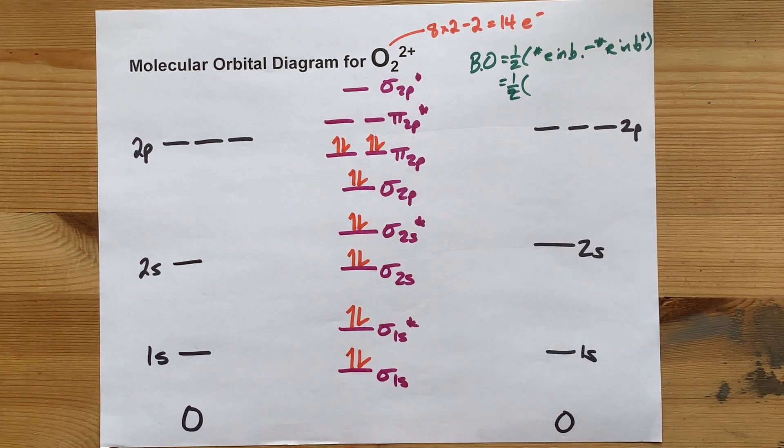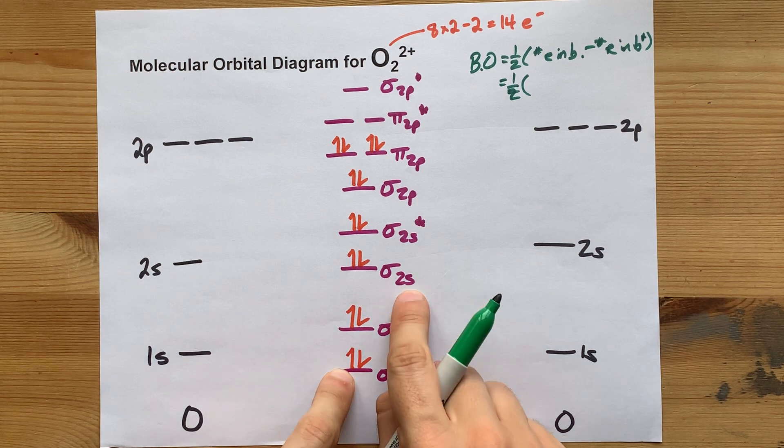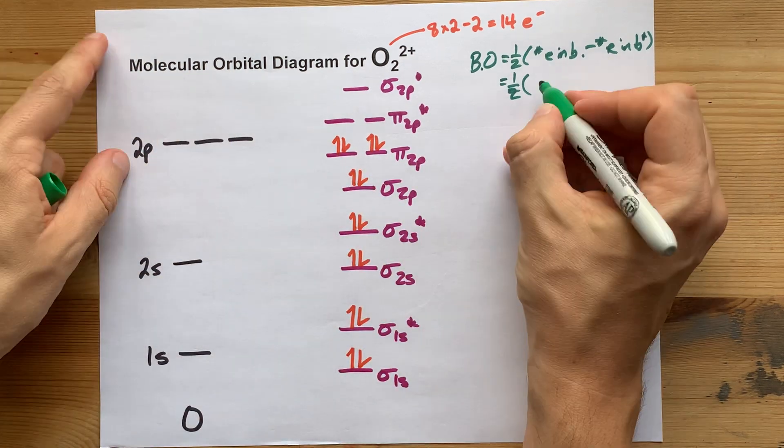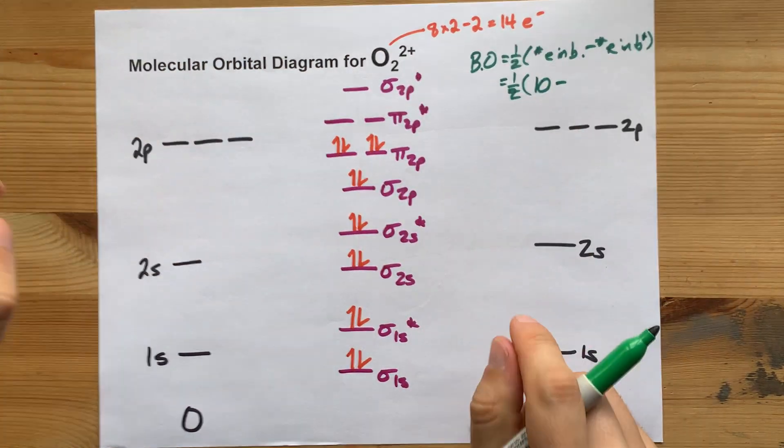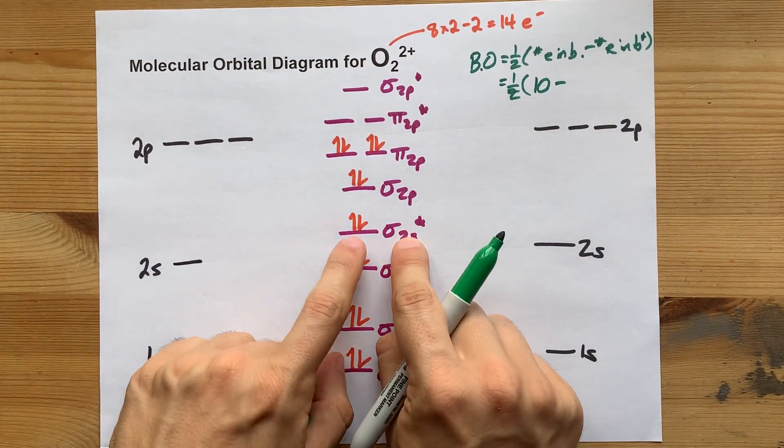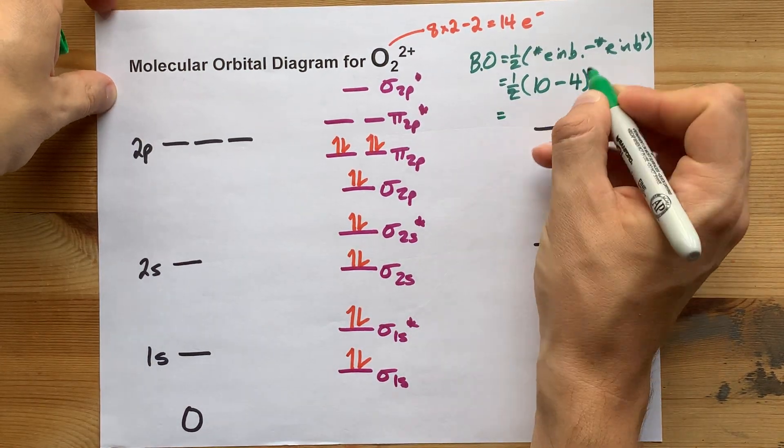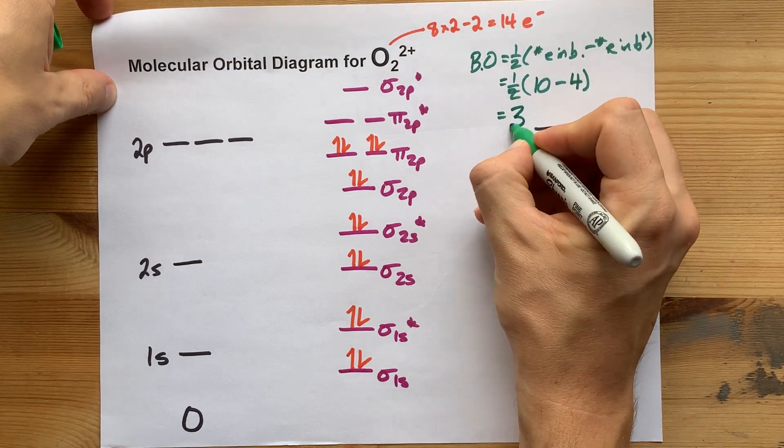Bonding means no asterisk. Counting, I get 10 electrons in bonding orbitals and 4 electrons in antibonding. 10 minus 4 is 6. Cut that in half. It's 3.